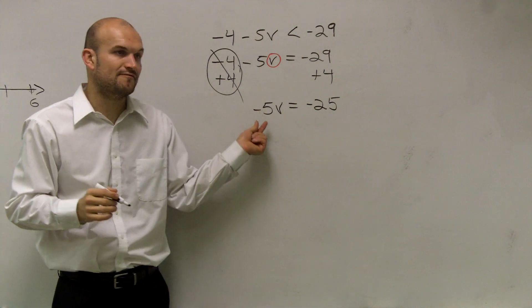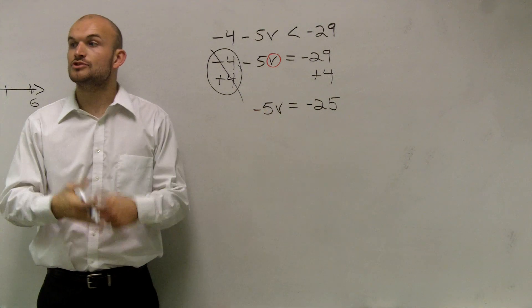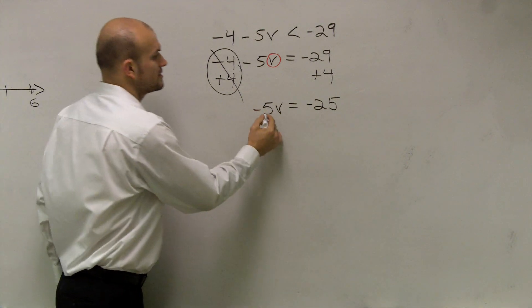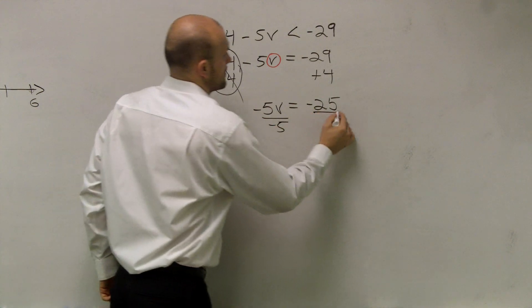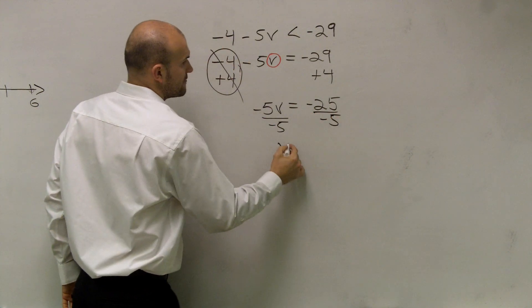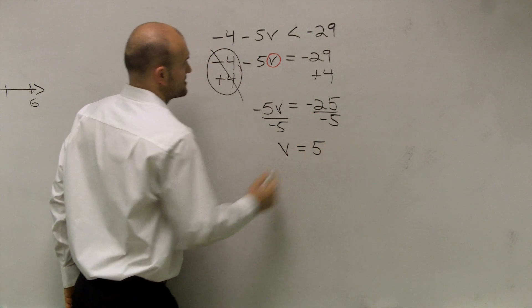Now I say, negative 5 is being multiplied by v. To undo multiplication is to divide by negative 5. Therefore, v is equal to a positive 5.